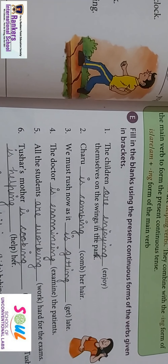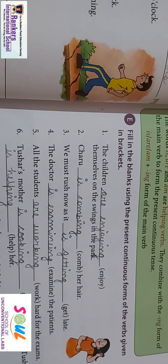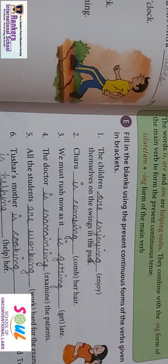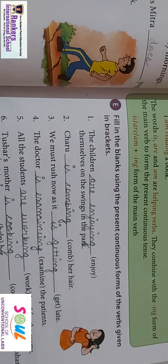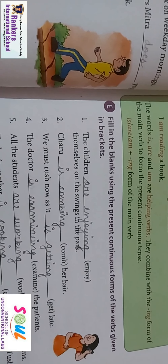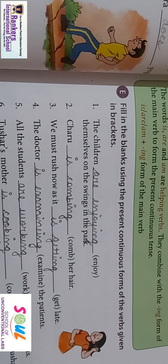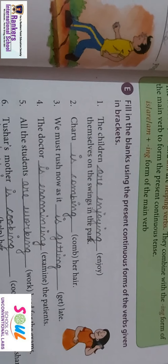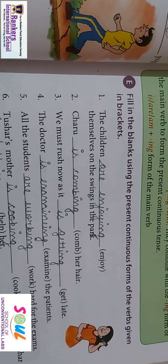So this is how you have to change every sentence — main verb plus ing form, plus helping verb. Next is: Charu is combing her hair — Charu apne hair comb kar rahi hai. So 'is' is again a helping verb, plus the main verb 'comb', and you add 'ing' to it to get 'combing her hair'. This is how you can change into simple present continuous form.